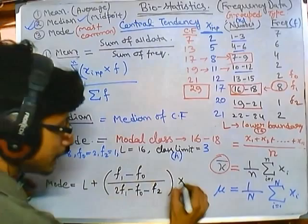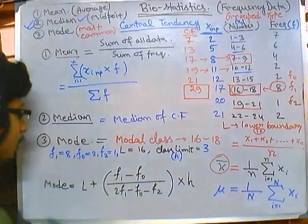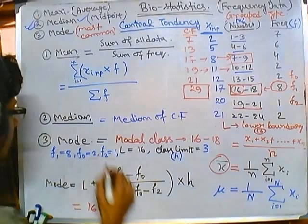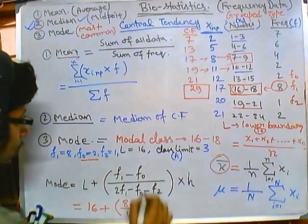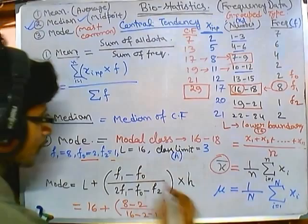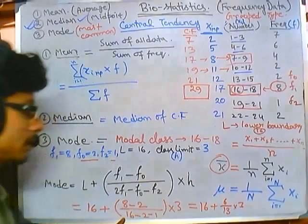Statistics is all about formulas — simply put in the values and you get the answer. Here L is 16, f1 is 8, f0 is 2, f2 is 1, and h is 3. So: 16 plus (8 minus 2) divided by (2 times 8 minus 2 minus 1) times 3, which gives 16 plus 6 divided by 13, times 3, equaling 16 plus 18 over 13.